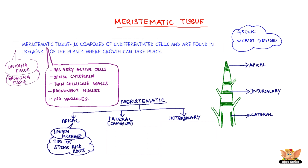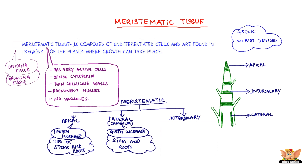The apical meristem increases the length of the stem and the root. It is found at the tips of the stem and the roots. Lateral meristem helps in girth increase, that is, increase in the diameter, and is responsible for girth increase in stems and roots.